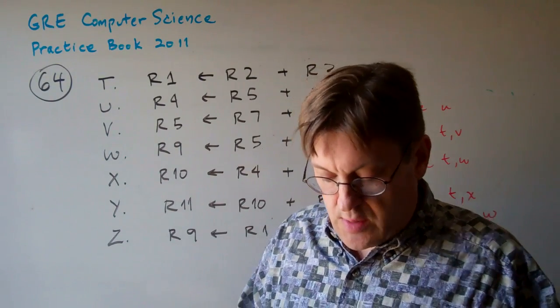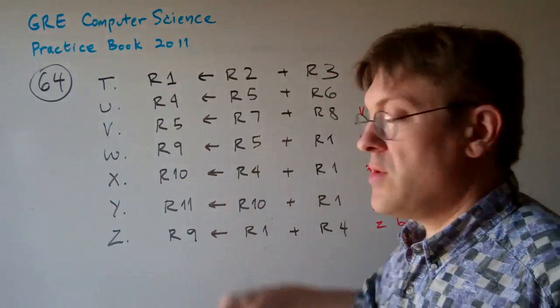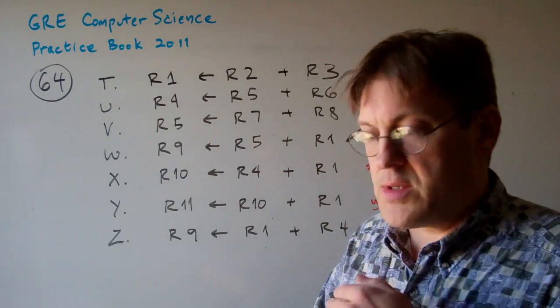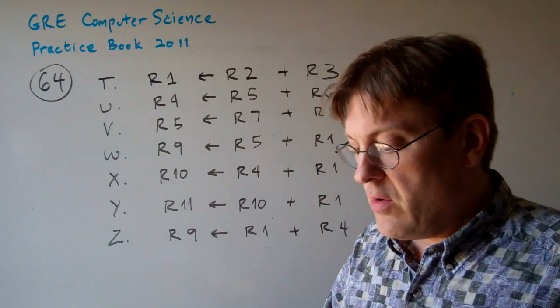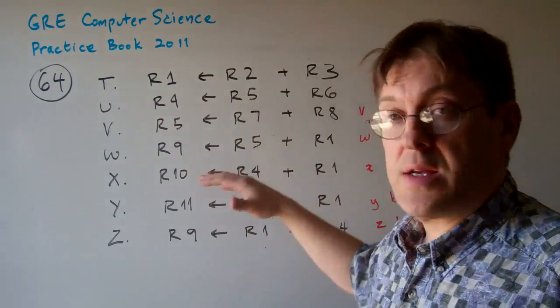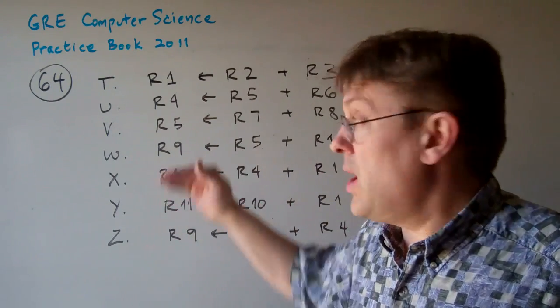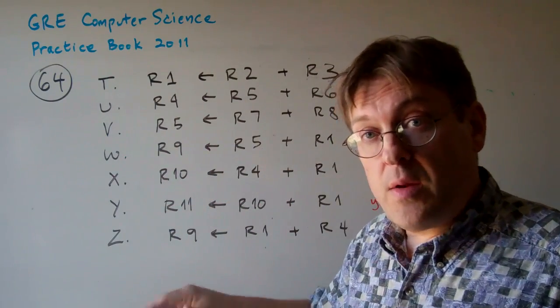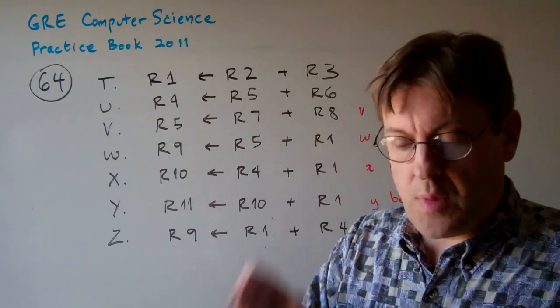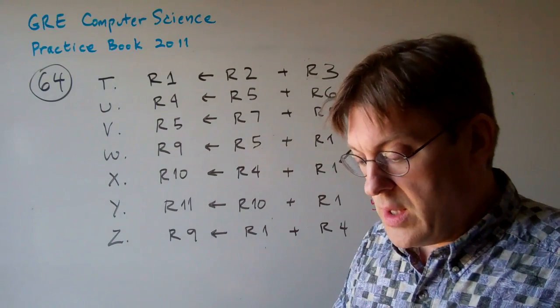Register renaming means we can trick the processor into changing the names of these registers, so we're not going to include that. What you see is what you get. And then out-of-order processor means you can go ahead and execute the steps not in this sequence, but you have to still get the same result. So, which is a legal execution order?